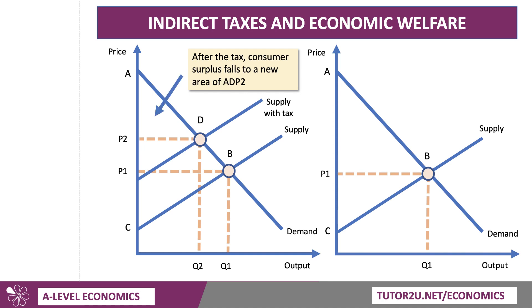The effect of a tax is to reduce consumer surplus, partly because there's a fall in quantity consumed from Q1 to Q2, but also because there's now a smaller gap between the price being charged, P2, and the area underneath the demand curve. So this indirect tax reduces consumer surplus from the area A, B, P1 down to A, D, P2. Consumer surplus is down.